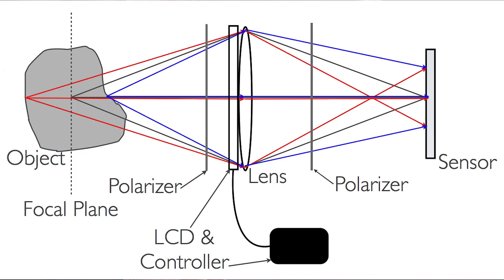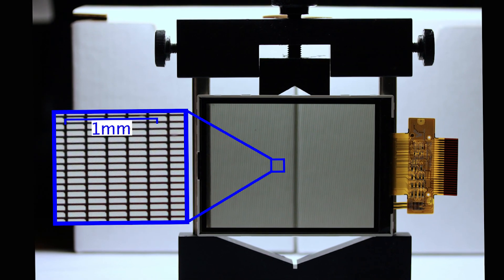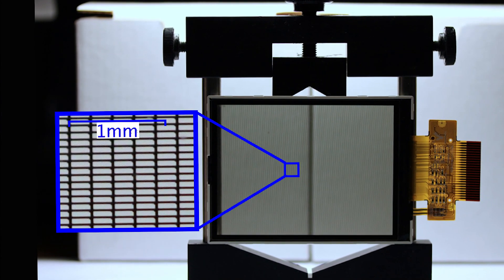One implementation of a digital aperture requires little more than an LCD screen placed at the lens. The LCD serves as a light switch, blocking light where the pixels are black and allowing light to pass where they are white.